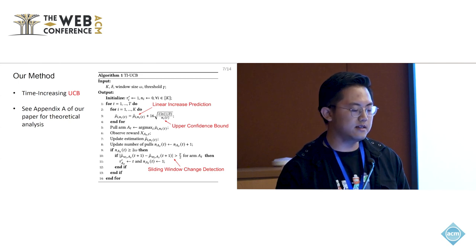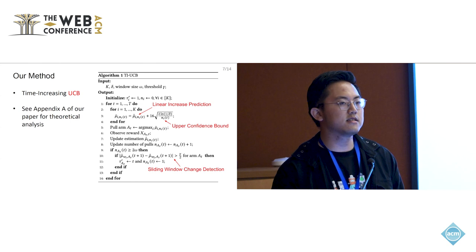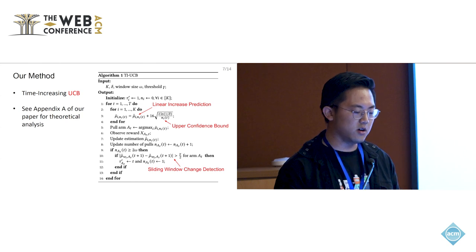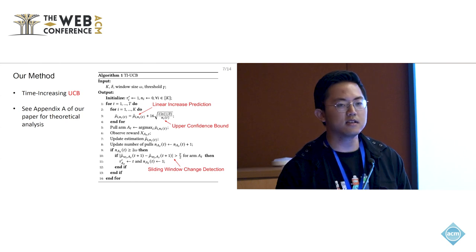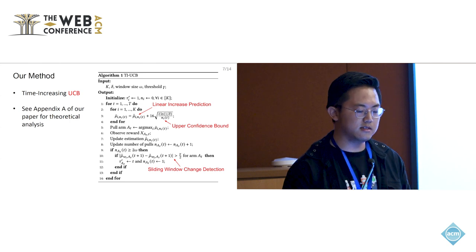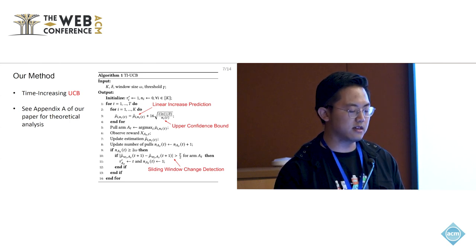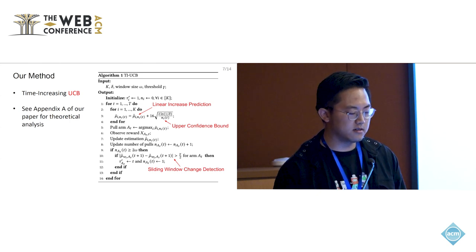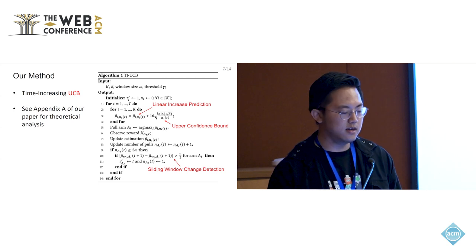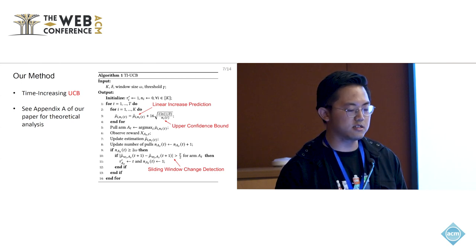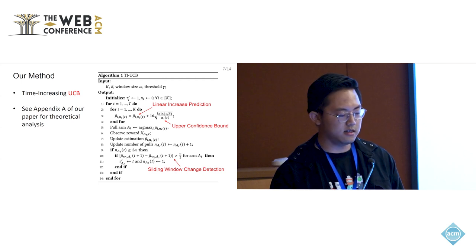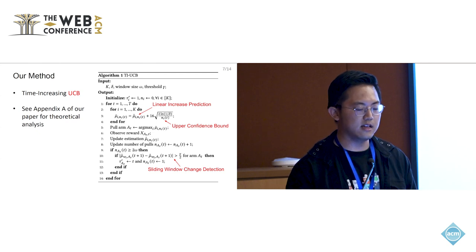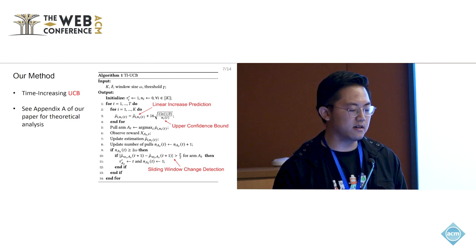After that, another important step is, since we have observed and want to capture the increasing converging trends in model training, we want to detect the converging point. Here, we use a sliding window change detection method to detect the converging point so that we can make the performance prediction more accurate. Essentially, the change detection compares the increased predictions of consecutive windows. If it is larger than a threshold, we consider it as a change point, and we reset all the estimations of this arm.